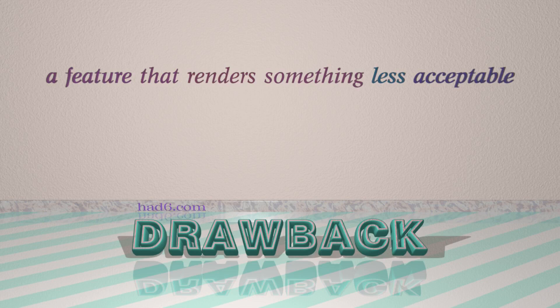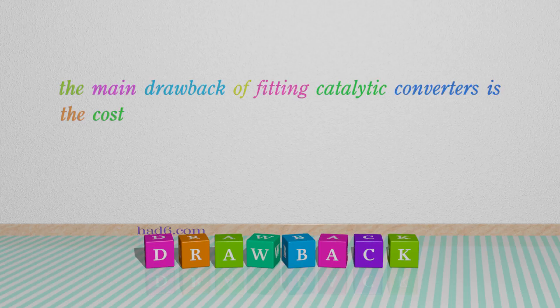Number 11: Drawback — which means a feature that renders something less acceptable. For example: The main drawback of fitting catalytic converters is the cost.